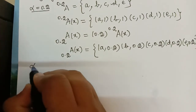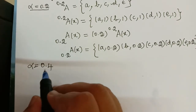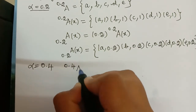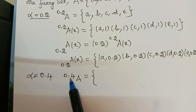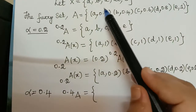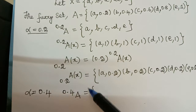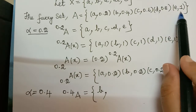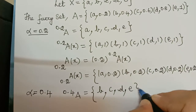Next, let alpha equal 0.4. To find the special fuzzy set, we first find the alpha cut set. The 0.4-cut of A consists of elements with membership grade greater than or equal to 0.4. Element A has grade 0.2, which is less than 0.4, so it is excluded. Element B has grade exactly 0.4 so it is included, and C, D, E are all greater than 0.4 and are also included. So the 0.4-cut of A = {B, C, D, E}.